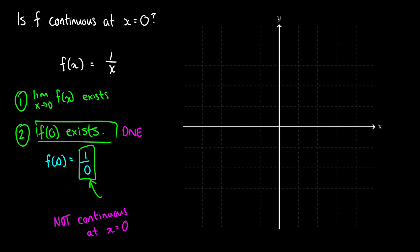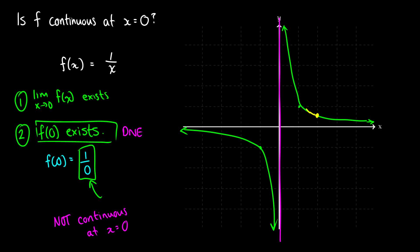If we were to graph this, we'd have a curve that goes up on one side and down on the other side of x equals zero. Intuitively, what we're asking is: if we put ourselves on the graph at some point and follow that line, we should be able to get from the right side of x equals zero to the left side without lifting our pen. But this simply cannot be done here because there's an asymptote at x equals zero. So graphically, we can also see that it's not continuous.